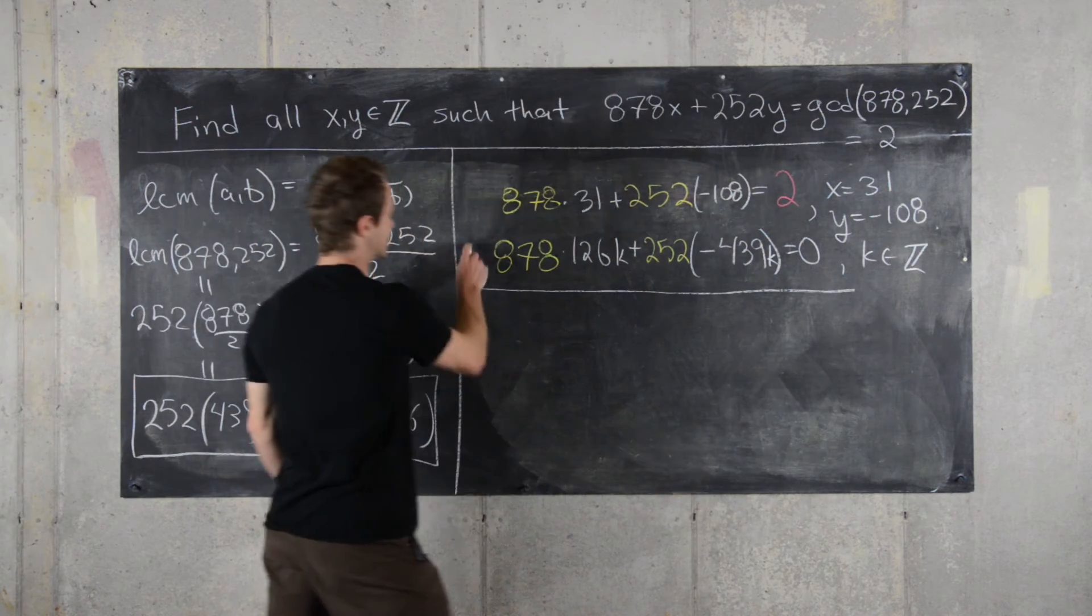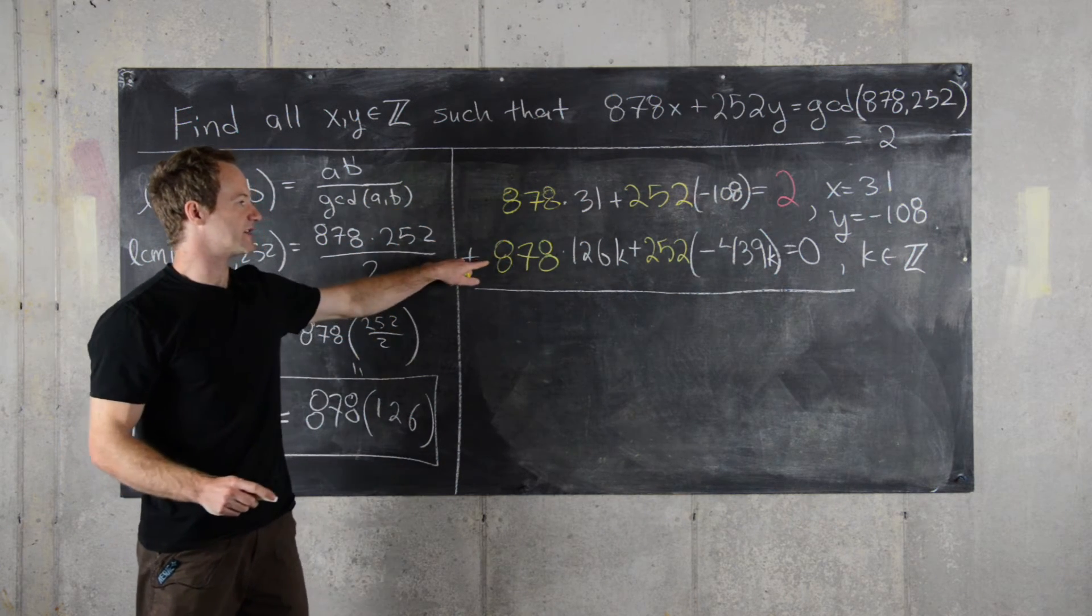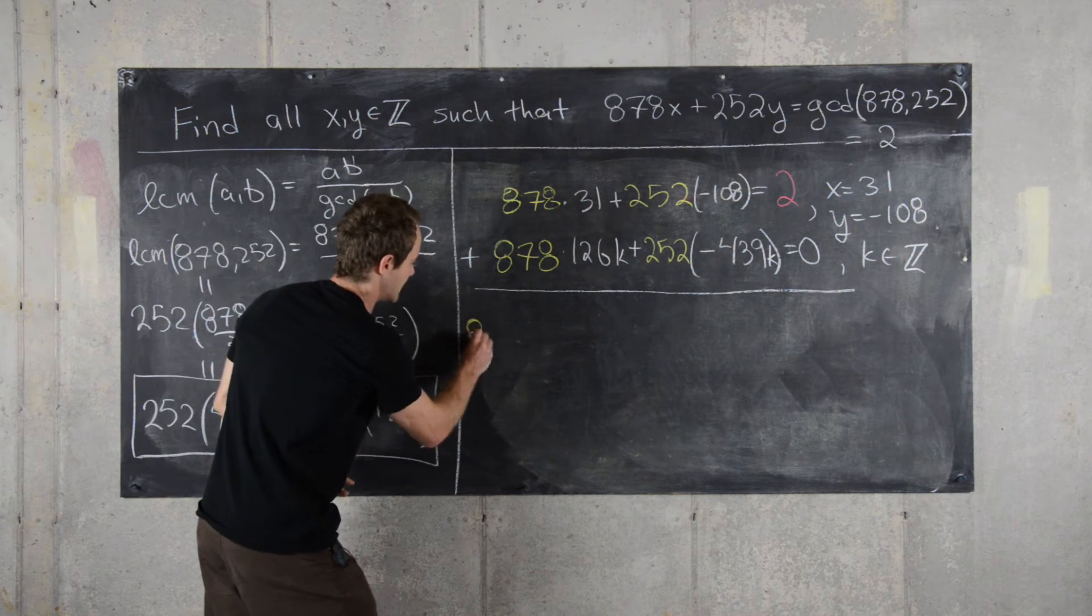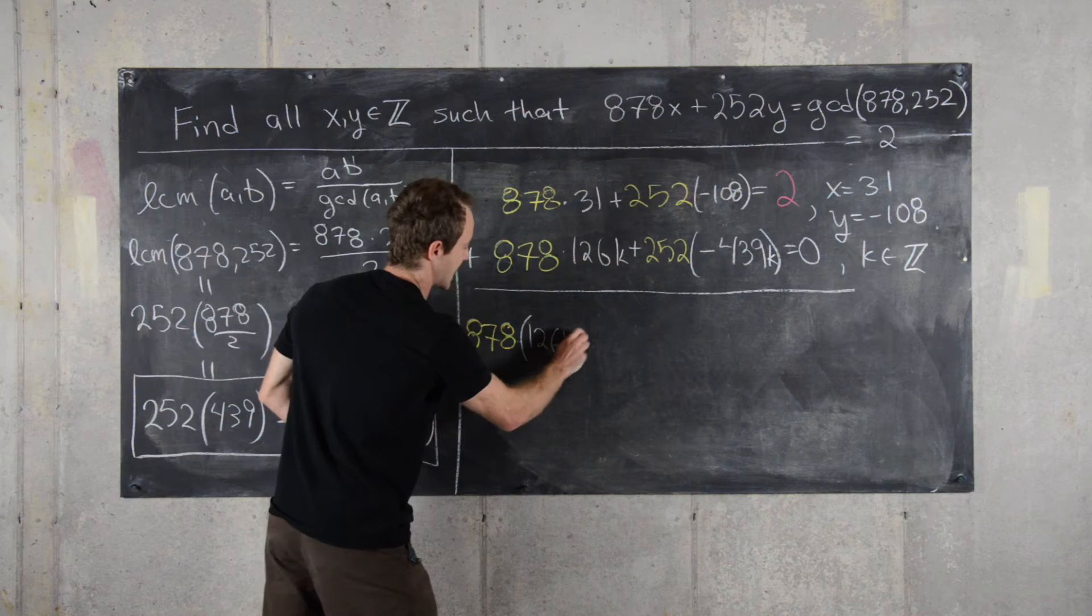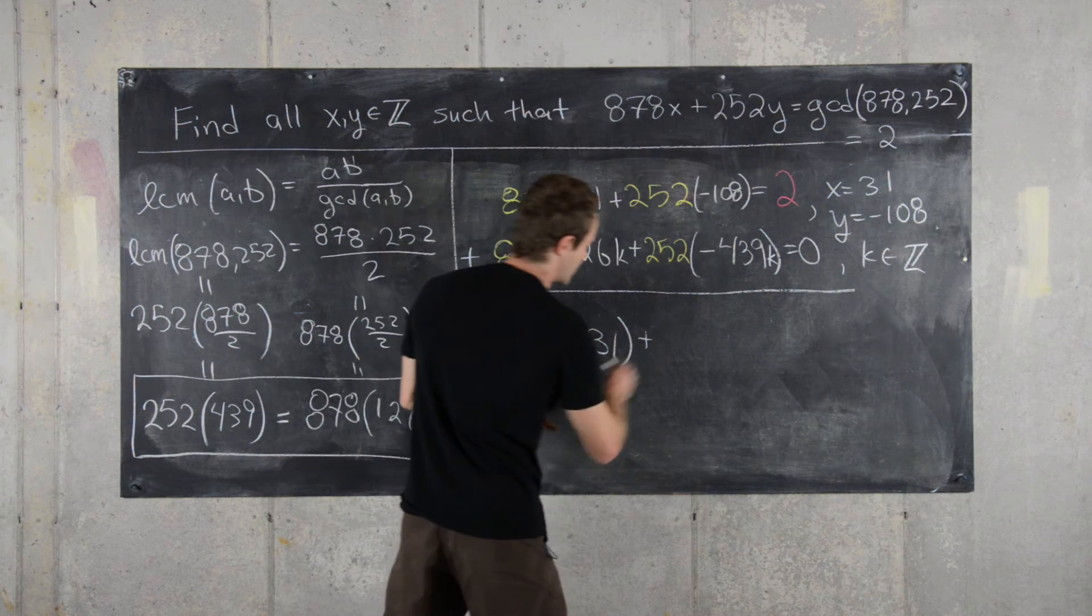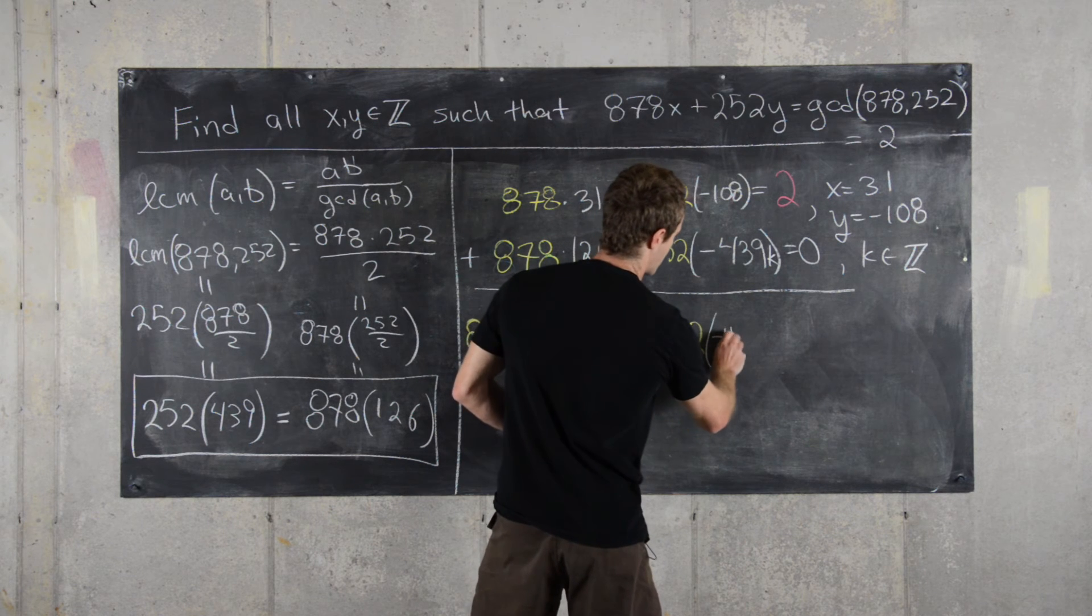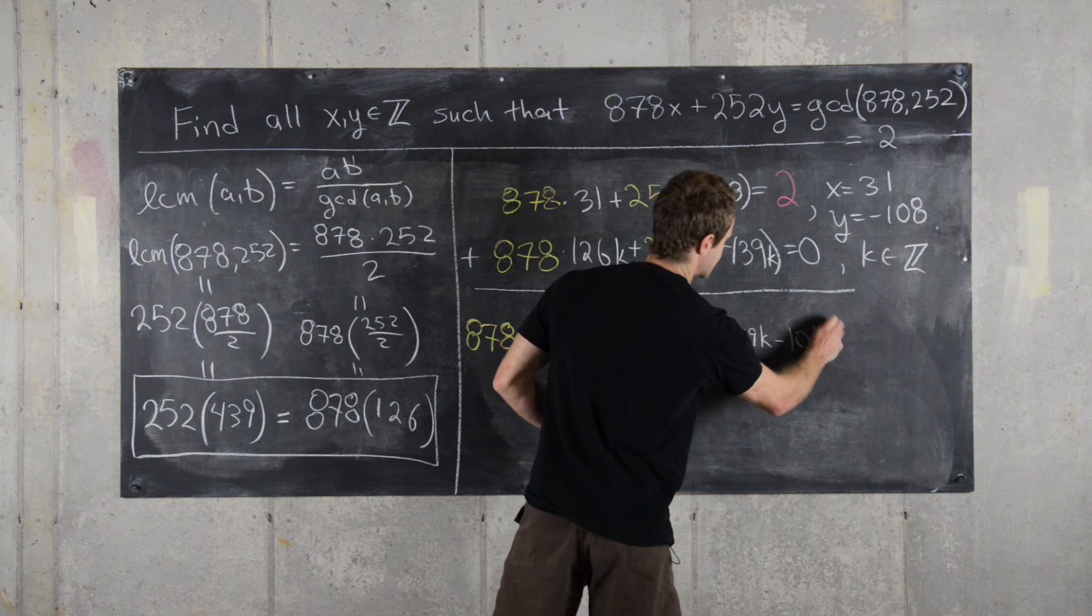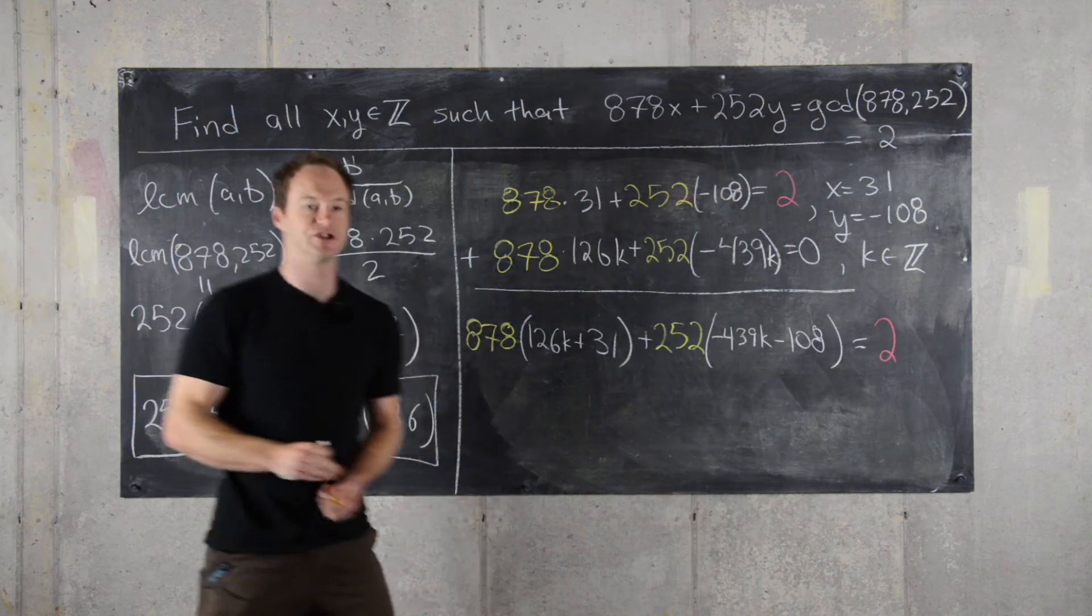Now the next thing we can do is add these two equations. The first one that we built solving for the GCD and the second one that we built that combines together to give 0. And that's going to give us 878 times the quantity 126k plus 31 plus 252 times the quantity negative 439k minus 108 equals 2 where 2 was the GCD.